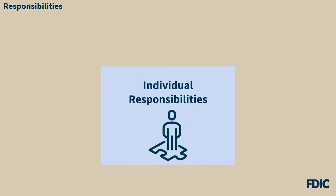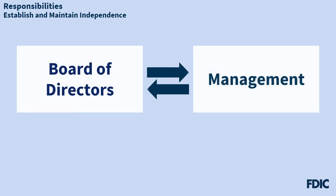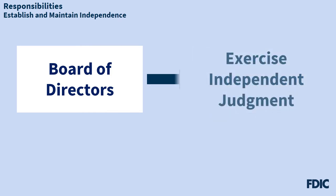A board member's individual responsibilities are the foundation of strong governance and help the board as a whole operate most effectively. The first responsibility we'll discuss is establishing and maintaining independence. While effective corporate governance needs a high level of cooperation between the board and management, a director or trustee's duty to oversee the conduct of bank business requires a sufficient understanding of the issues presented to enable them to exercise independent judgment.